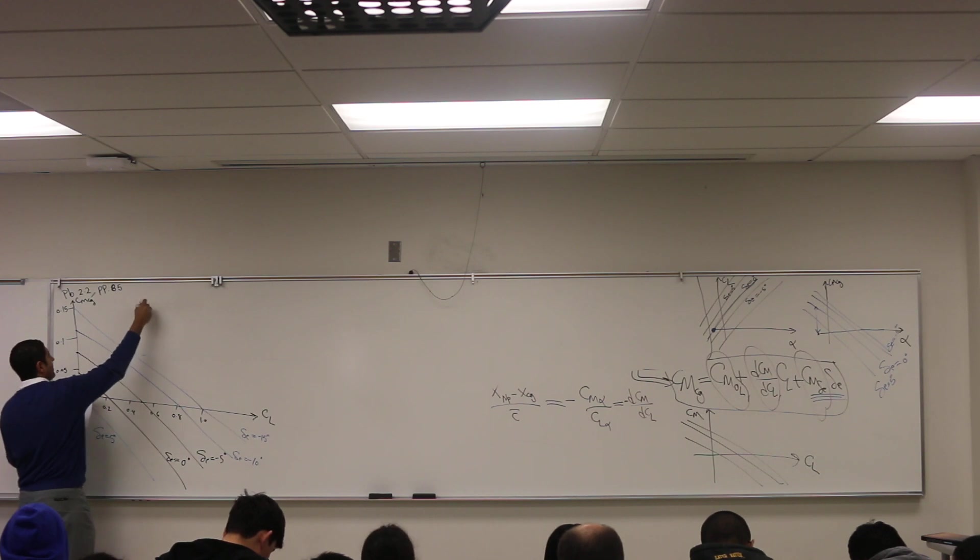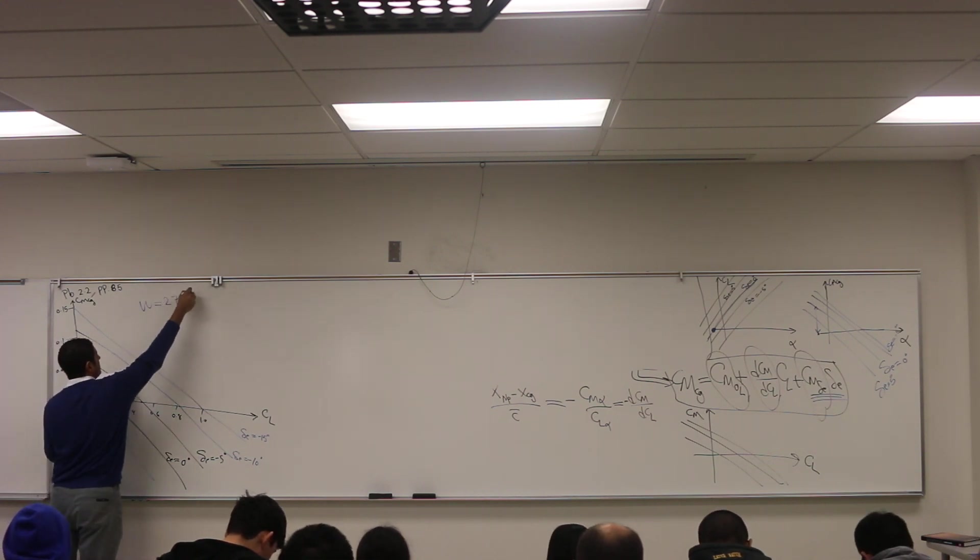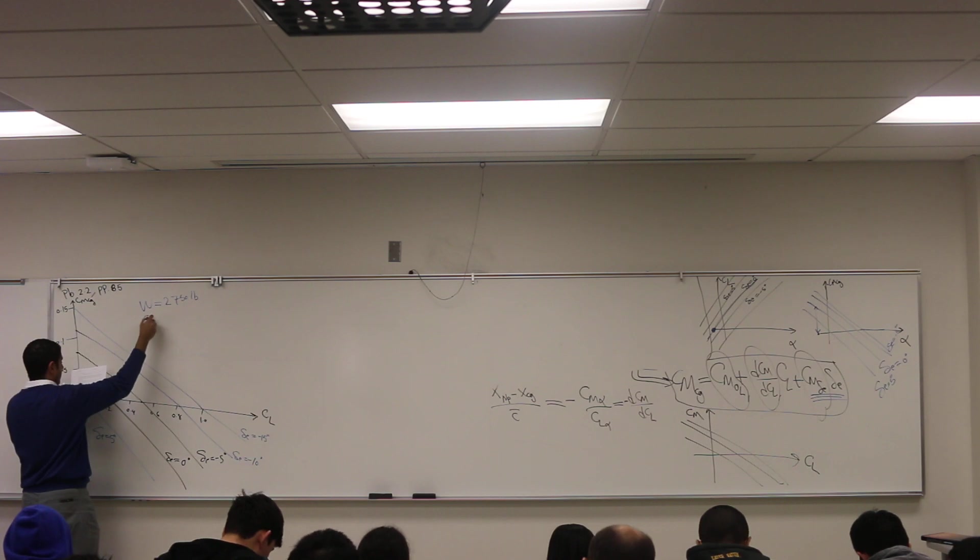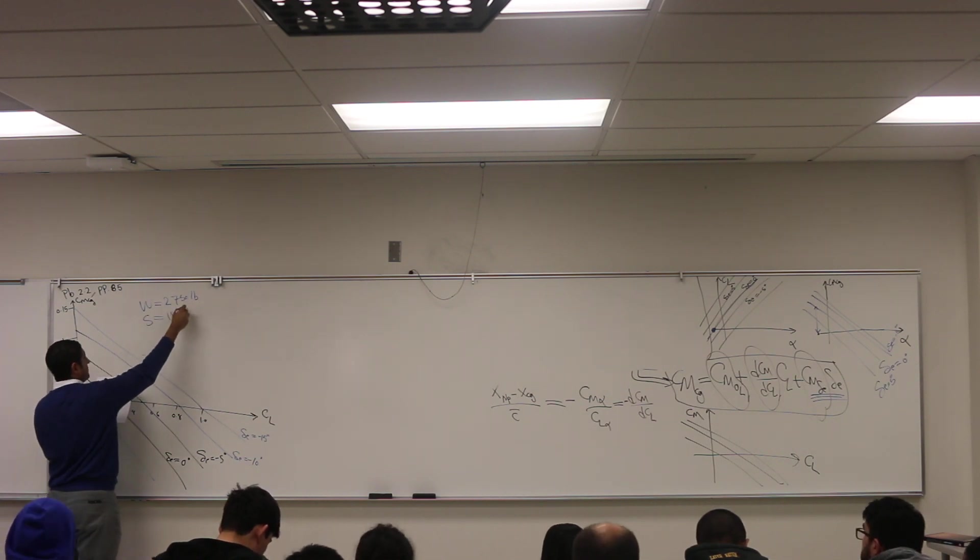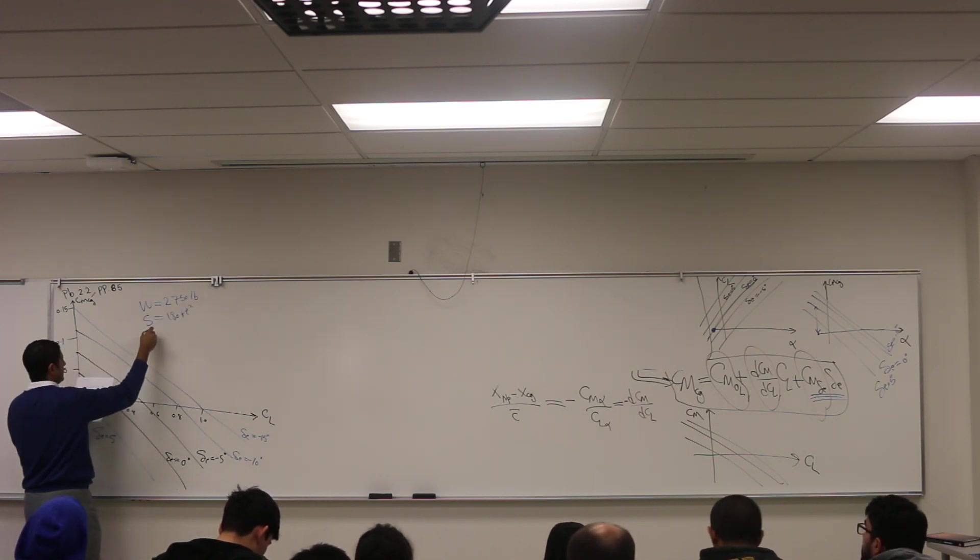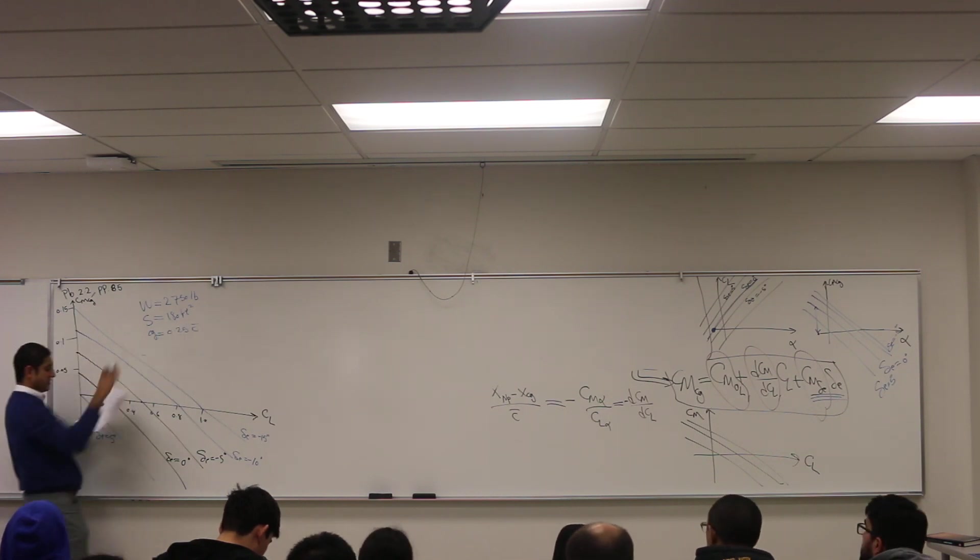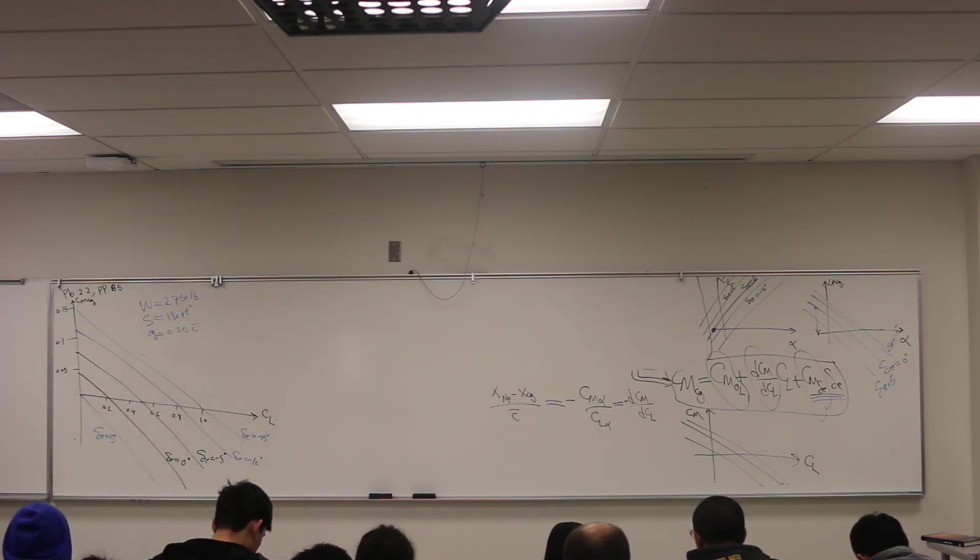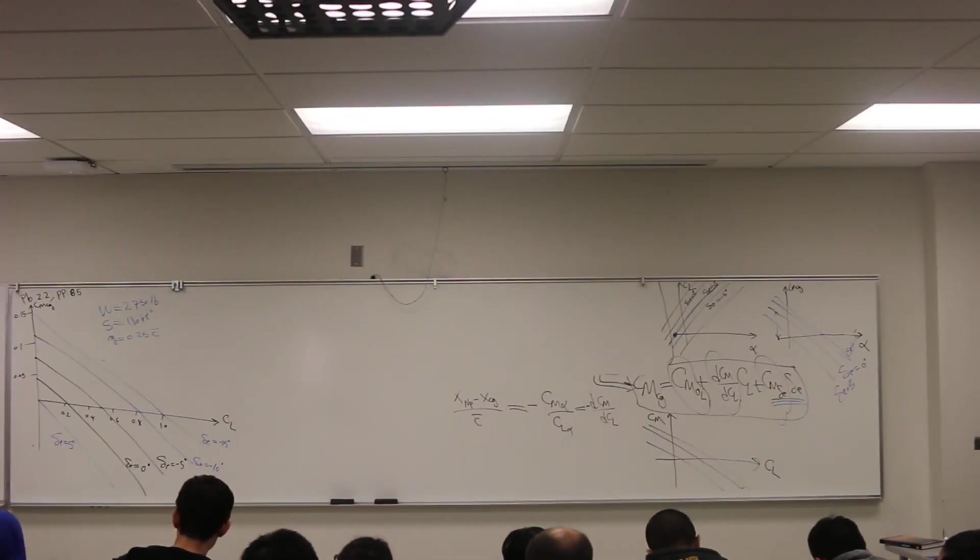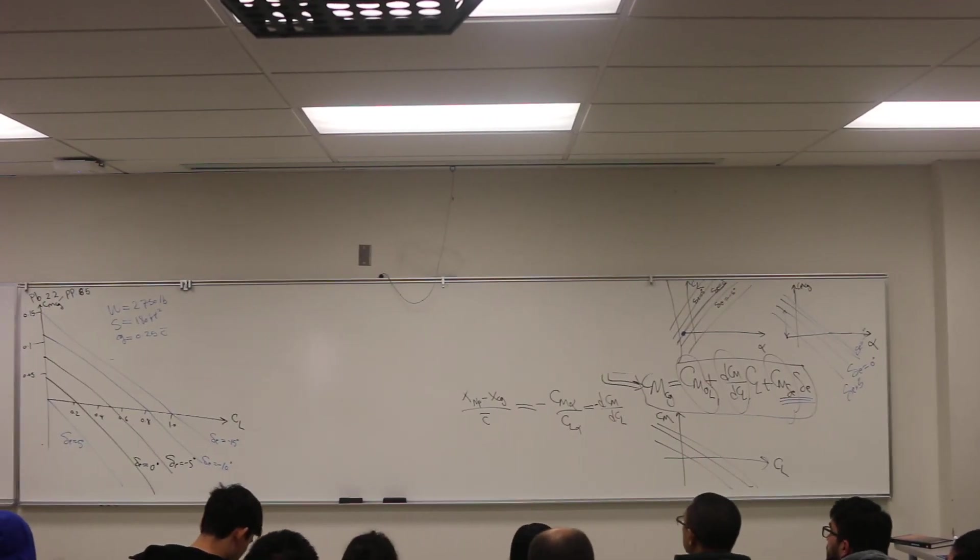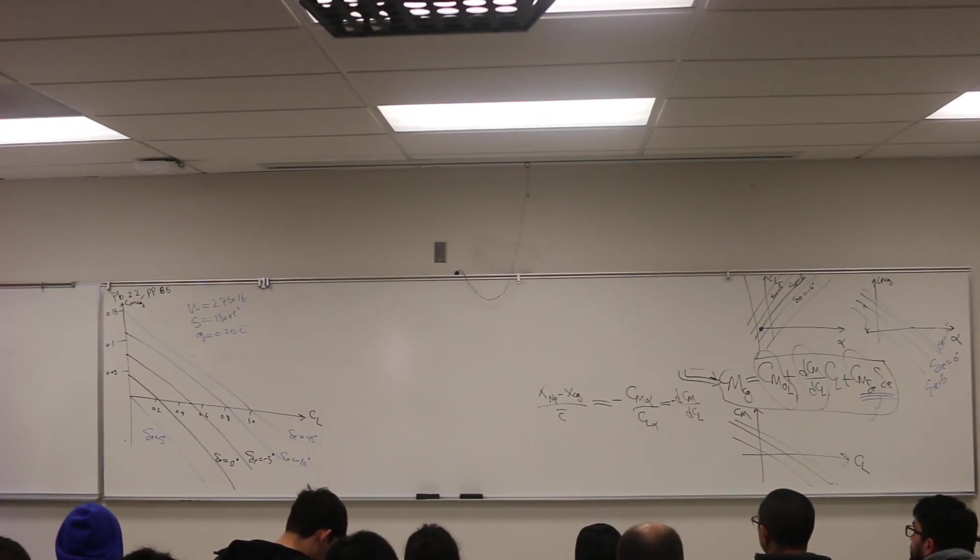We're giving this figure, we're giving the weight of the airplane as 2750 pounds, area 180 feet squared, and CG is at 25.4% MAC. Please, if you have a question, come up with it. Any question? They are all parallel. They have to be all parallel. All have the same slope. And the slope is very important for the stability point of view.